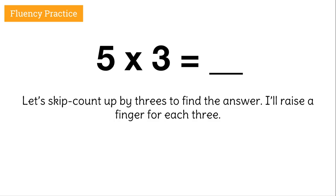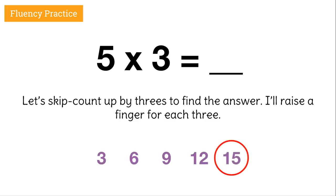Time for some good old multiplication. Five times three equals what? Let's skip count by threes to find the answer. I'll raise a finger for each three — you're just going to have to imagine me doing that. Ready? Let's count together: three, six, nine, twelve, fifteen. Five times three is fifteen.